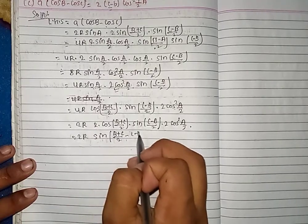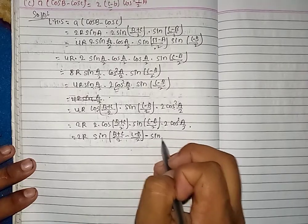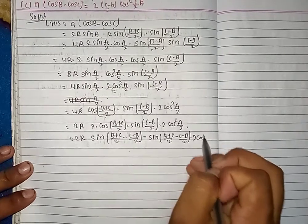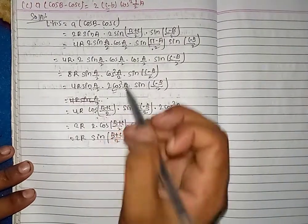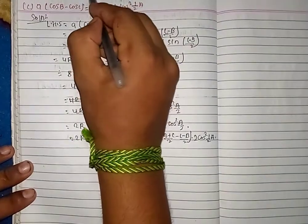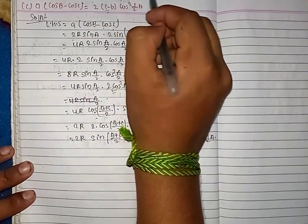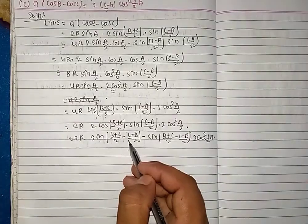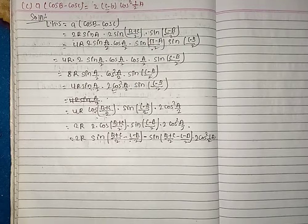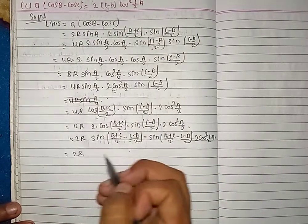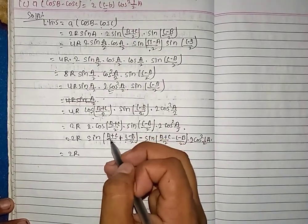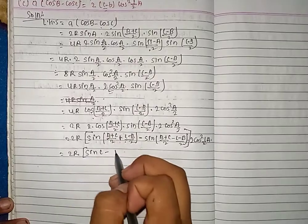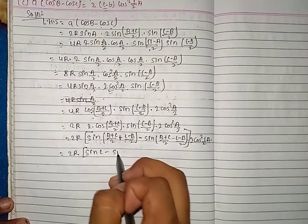sin[(B+C)/2 − (C−B)/2] minus sin[(B+C)/2 + (C−B)/2], into 2·cos²(A/2). So sign A minus sign B equals formula: 2·cos[(A+B)/2]·sin[(C−B)/2]. So it's B minus C. OK, you want to learn it — so B came first again.